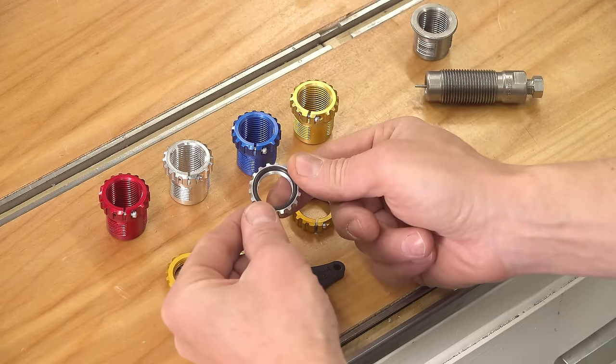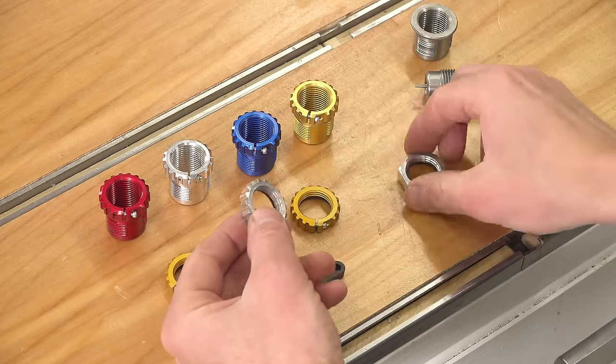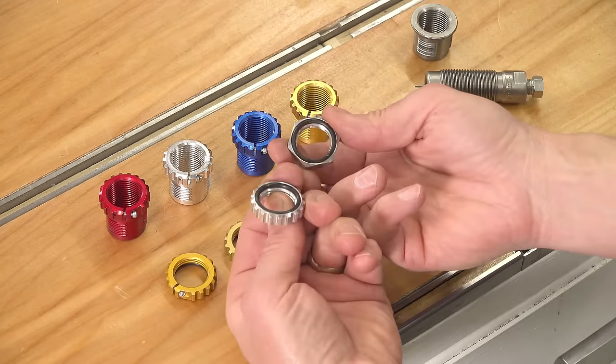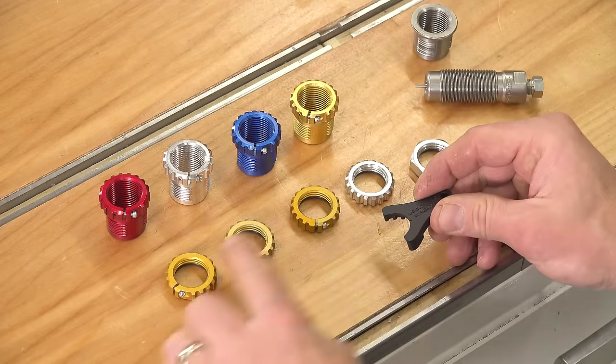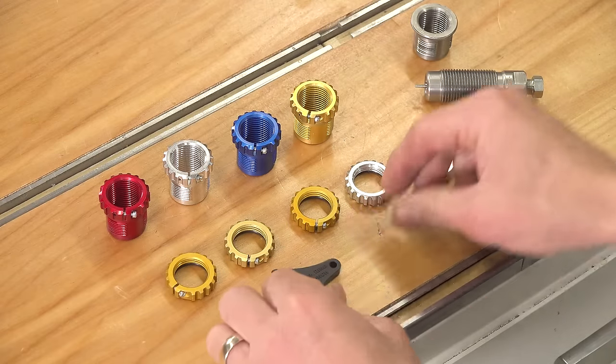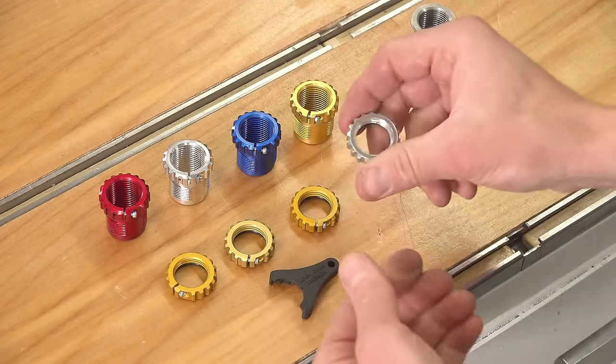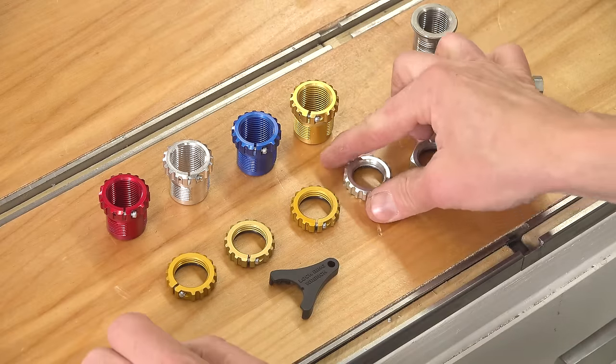As I mentioned in my Lee Pro 1000 video, I give an overview of setting up dies and I show using this die lock ring wrench, which comes with the Ultimate Lock Ring Set, to adjust the dies and to lock down the die lock ring.